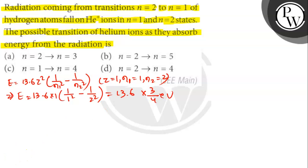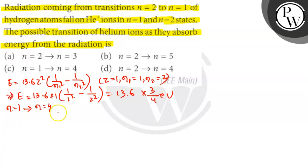We compare this value with the energy released for each of the transitions mentioned in the question. The one with the value equivalent to that of the hydrogen atom will be the answer. The atomic number of the helium ion is Z=2. In the first case, the transition is N=1 to N=4, giving E = 13.6 × 2² × (1/1² − 1/4²).